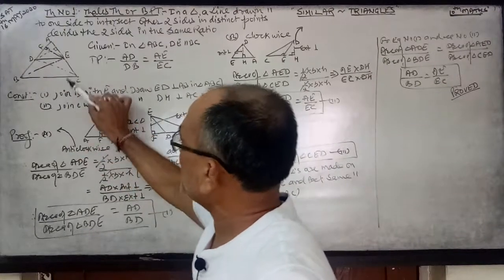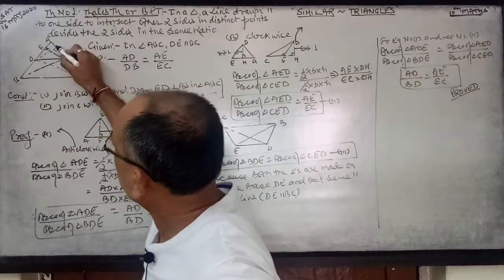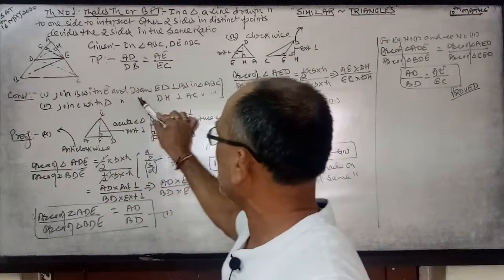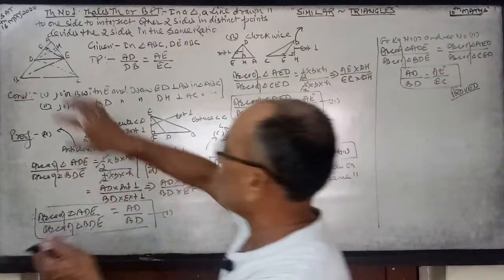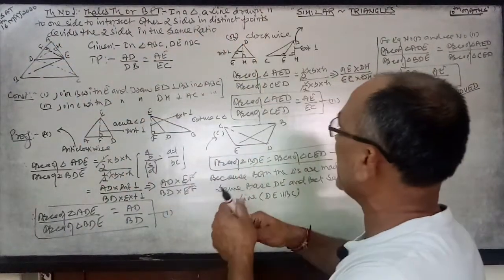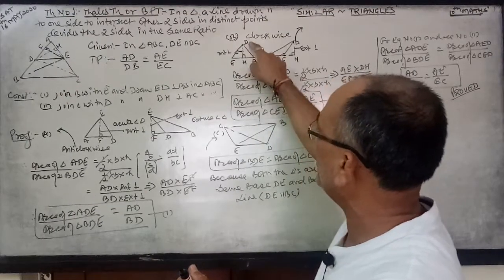In another part, join C with D, and draw DH, this DH is perpendicular to AC. So now I am going to rotate it clockwise. When I am rotating clockwise, D will go up.